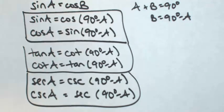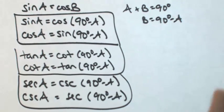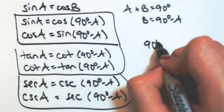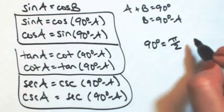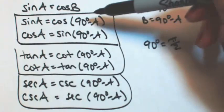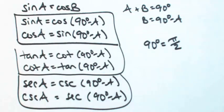And now I just happen to use 90 degrees, but you could have also written this in terms of radians. Remember that 90 degrees is pi over 2 radians. So this could also be applied to replace all these 90 degrees with pi over 2.